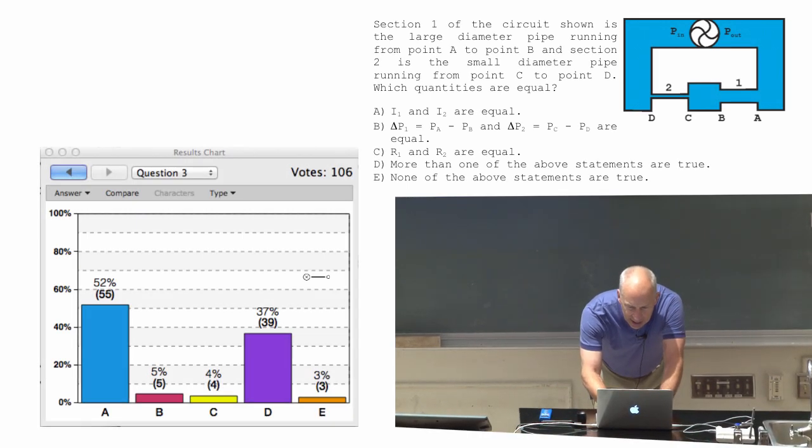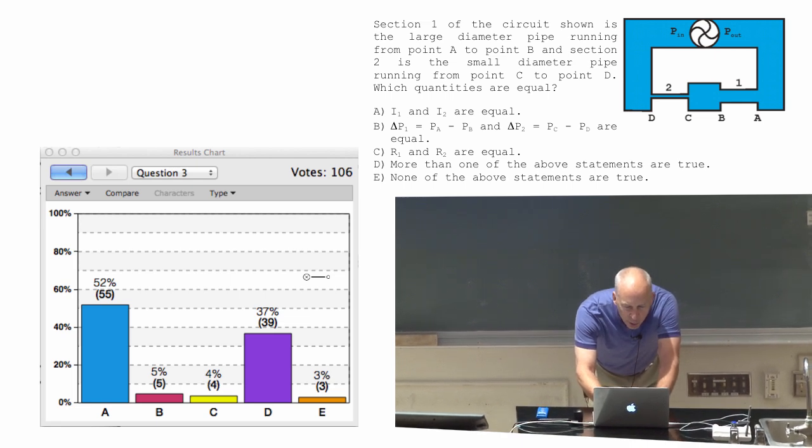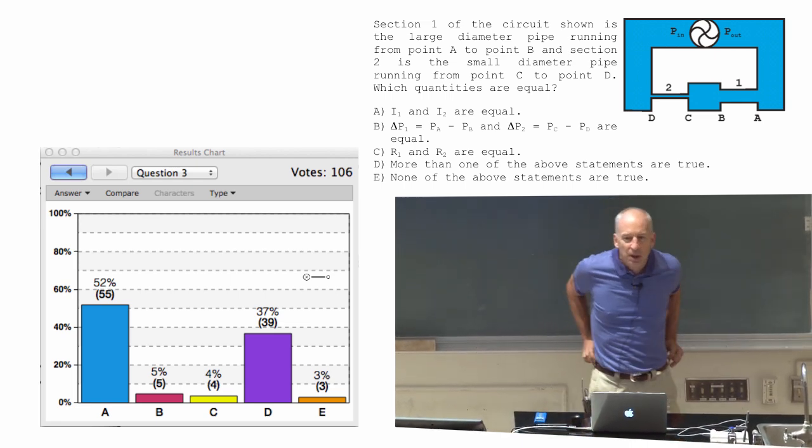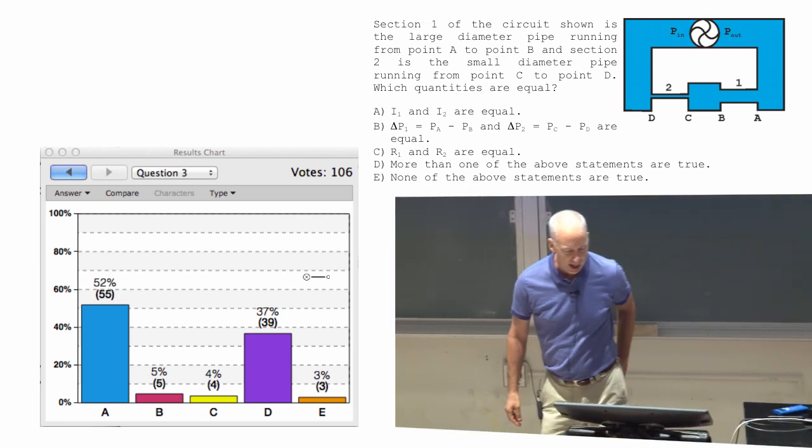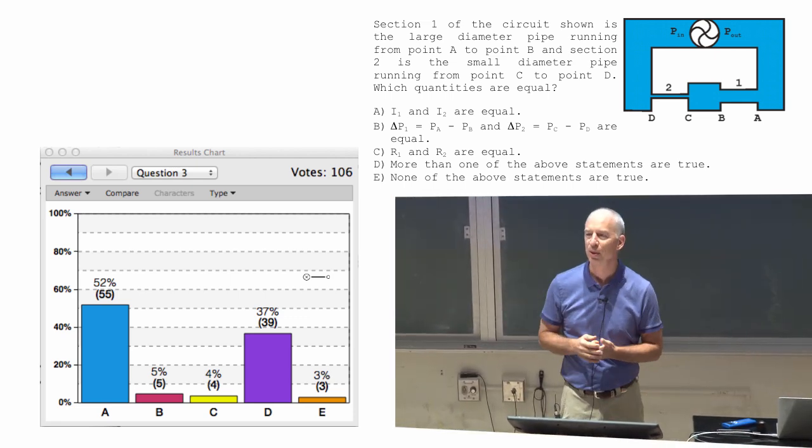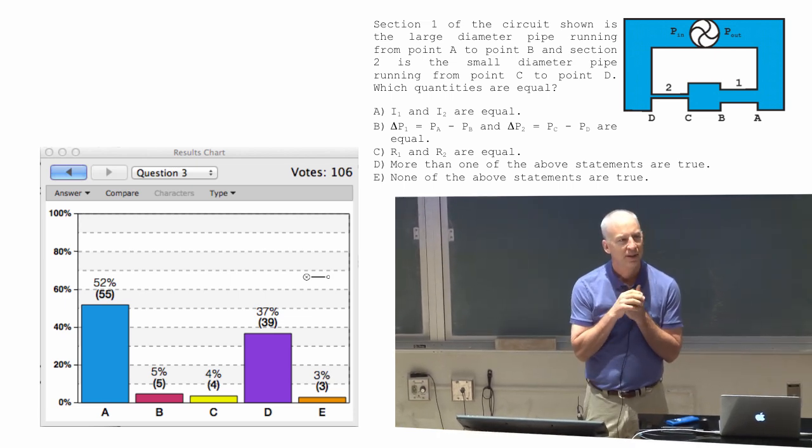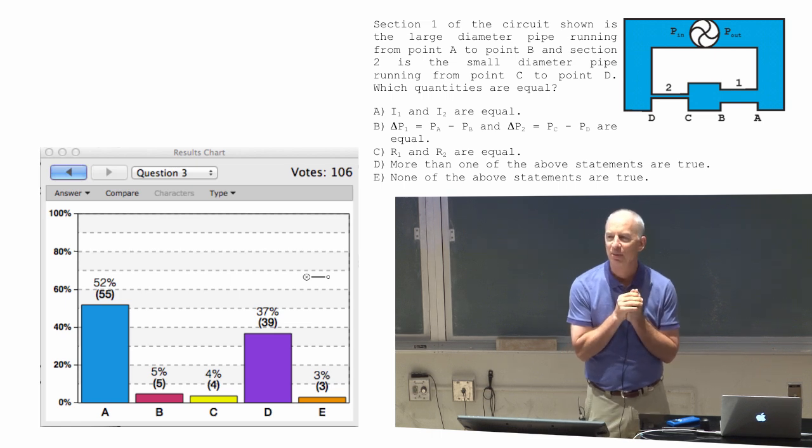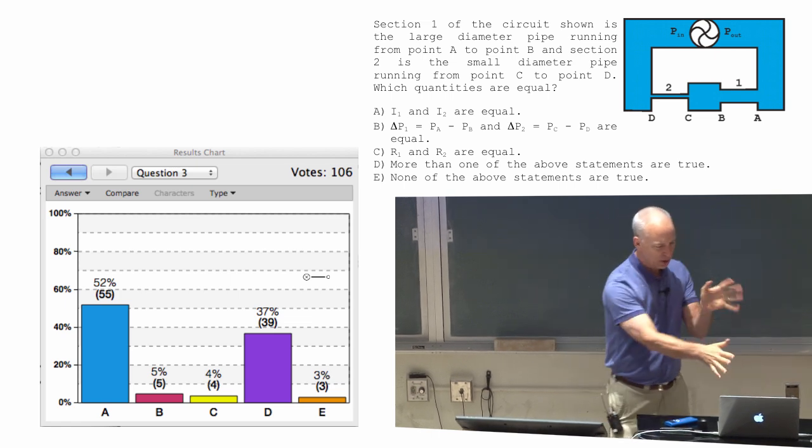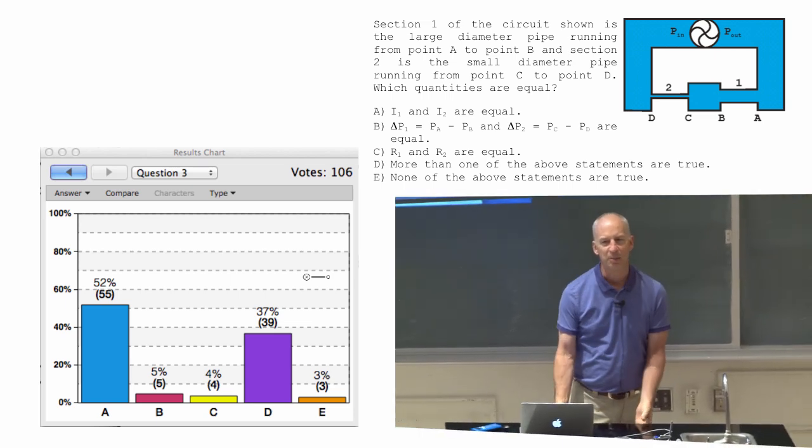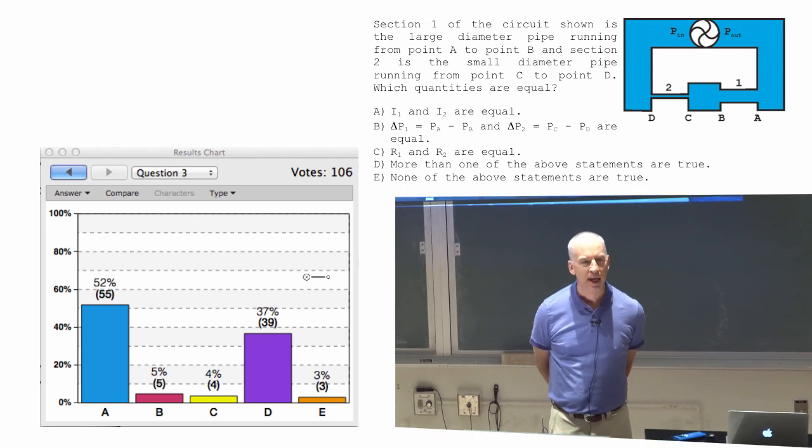So, what did we get? A's and D's. D's are that more than one of the above statements are true. I'm gonna assume that those people who answered D also answered A. Anyone answer D and think A was not one of those two? Just because there's so many A's and D's, I'm gonna start lumping them together. Answer A, someone want to tell me why you answered A? A lot of people did.